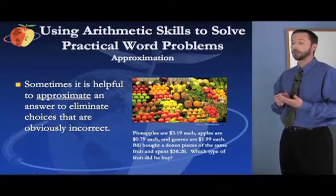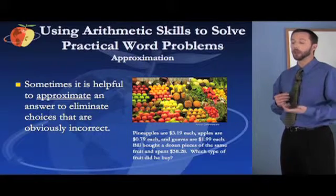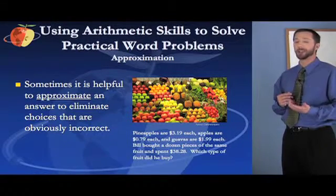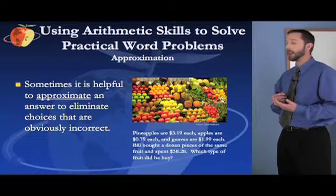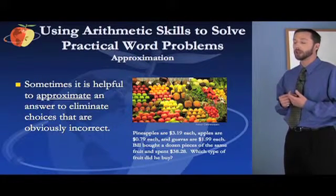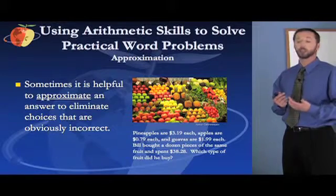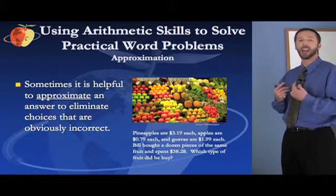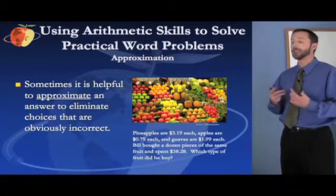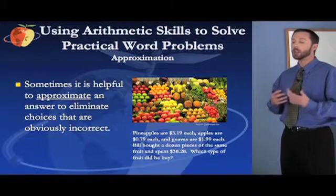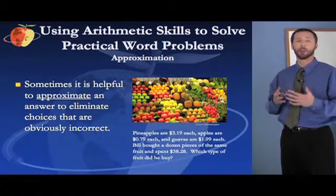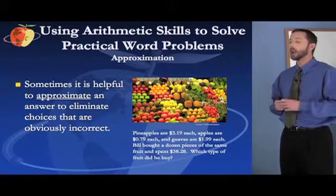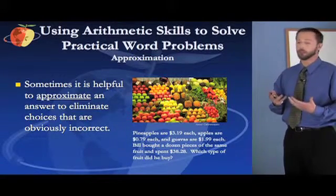Then we look at apples. If we round this to $1.00, $1.00 times 12 is $12.00, not very close. And then we round guavas to $2.00, $2.00 times 12 is $24.00. Well it's closer than the apples, but it's not nearly as close as the pineapples. So without even having to actually multiply each of these out in their exact form, we can know just by estimating or ballparking this that pineapples have to be what he purchased.